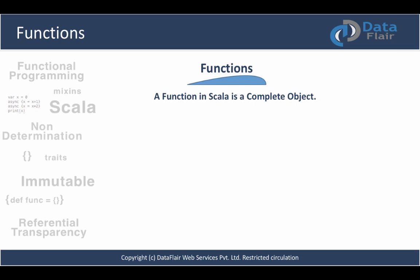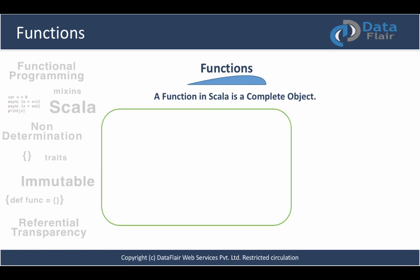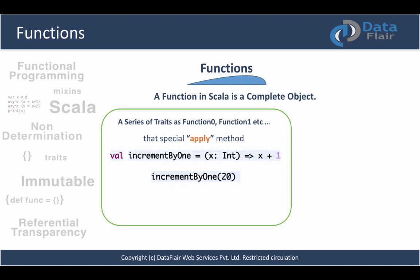A function in Scala is a complete object — we take a function value, a function literal, combine them, and call it an object. In Scala, a series of traits exist as Function0, Function1, and so on up to Function22. These traits have a special apply method. For example, val incrementByOne is defined with a function literal: x of integer type converts to x plus one.